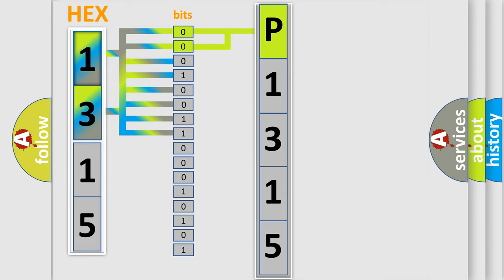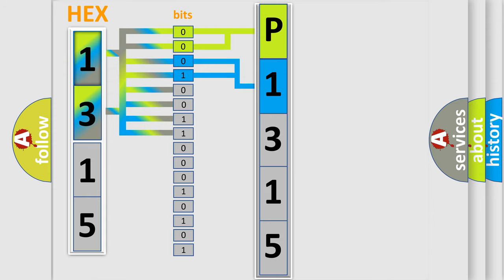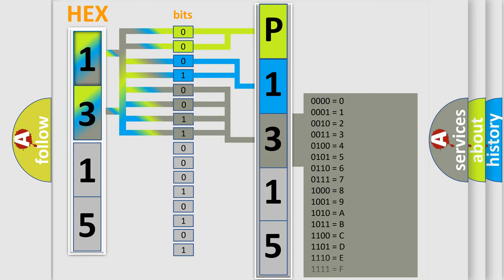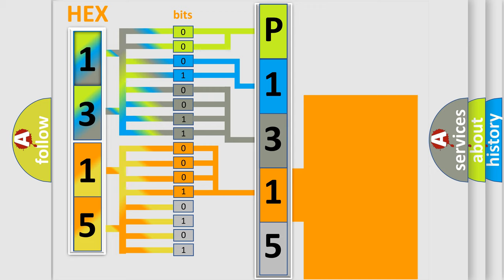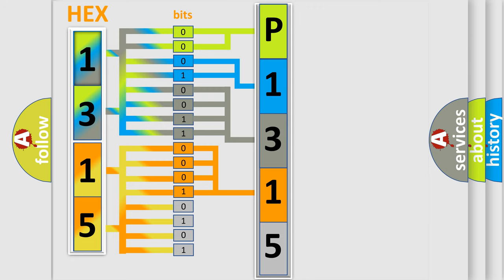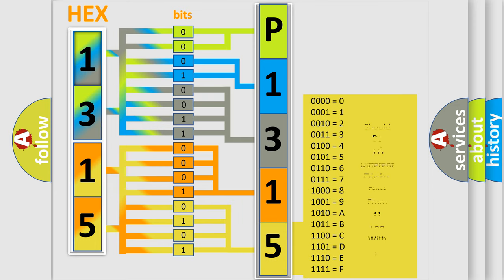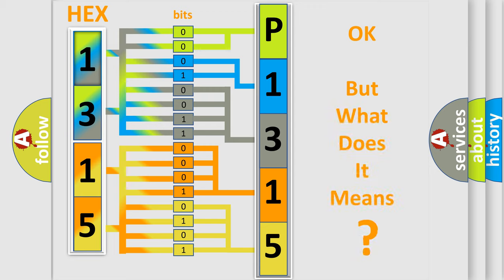The next two bits determine the second character. The last bits of the first byte define the third character of the code. The second byte is composed of a combination of eight bits. The first four bits determine the fourth character, and the combination of the last four bits defines the fifth character. A single byte conceals 256 possible combinations. We now know in what way the diagnostic tool translates the received information into a more comprehensible format. The number itself does not make sense to us if we cannot assign information about what it actually expresses.